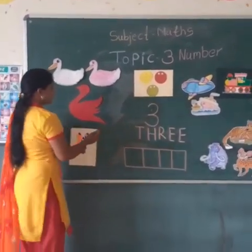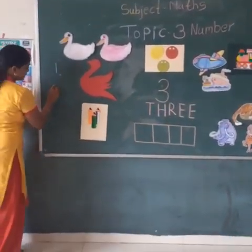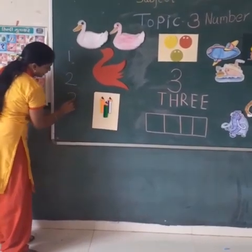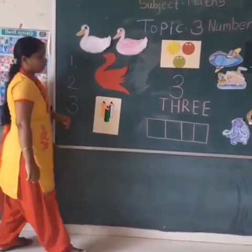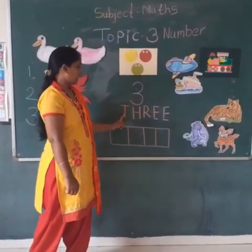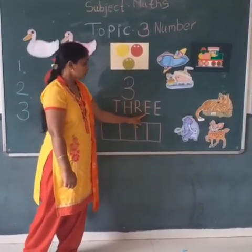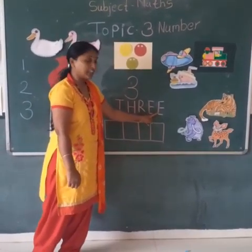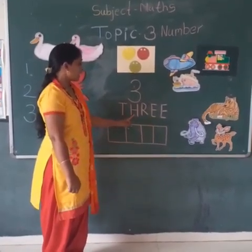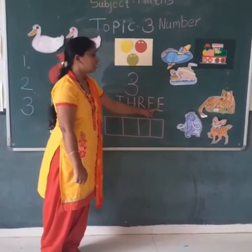First of all, we will count: 1 number, 2 number, 3 number. See, 3 number. It is spelled T, H, R, double E — THREE. Kya ane: T, H, R, double E — 3.